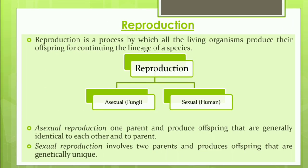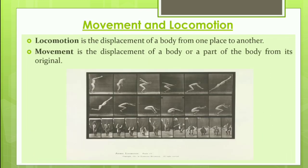The next feature is reproduction. Reproduction is the process by which all living organisms produce offspring to continue the lineage of a species. It is divided into two types: asexual reproduction, which involves one parent and produces offspring generally identical to each other and to the parent (example: fungi); and sexual reproduction, which involves two parents and produces genetically unique offspring.